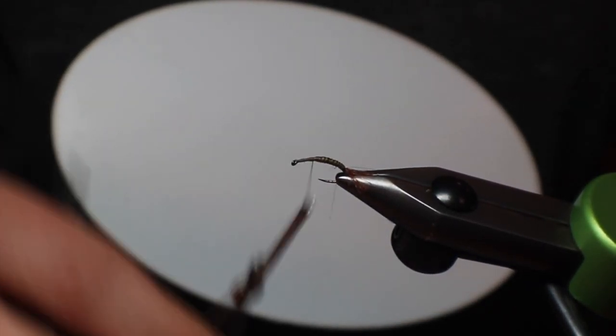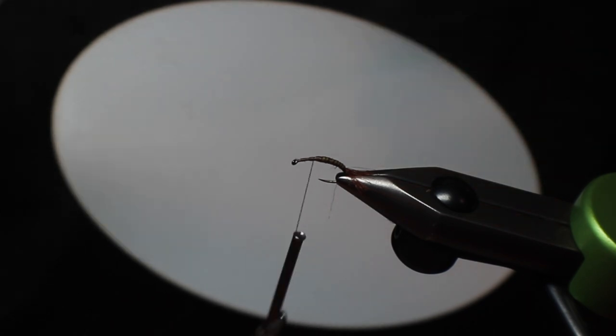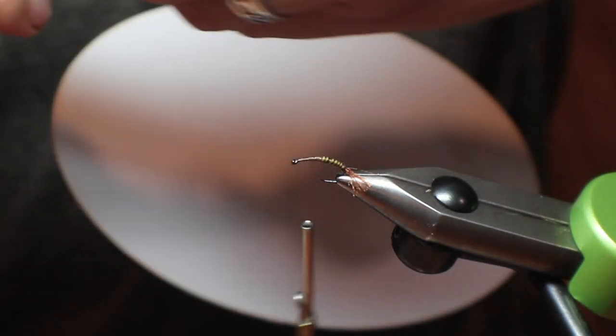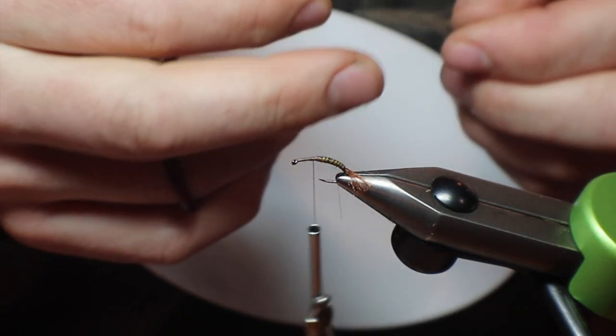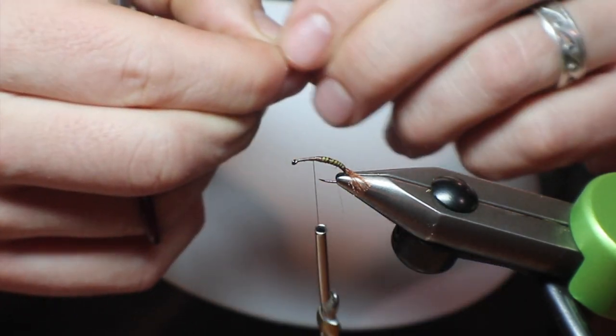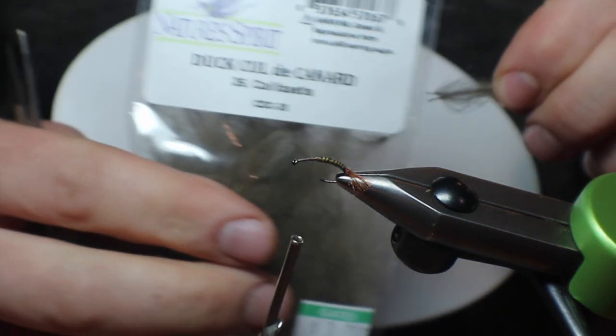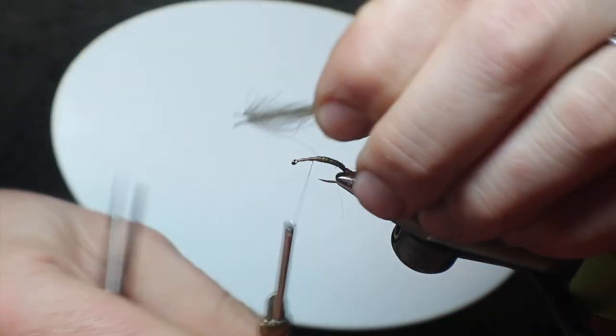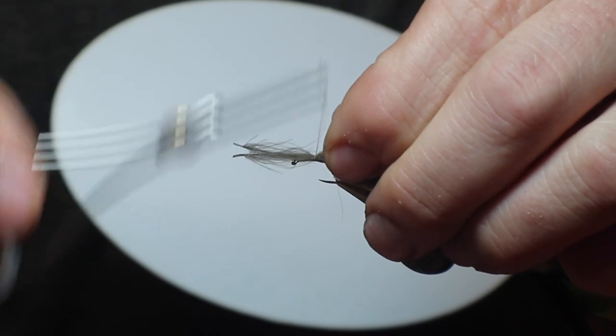All right, so now the cool part of this fly is it's got a CDC hump in the middle of it. I'm going to use two CDC feathers. I think you can use puffs quite well for this. I just haven't... I've always used the full feather. Well, two full feathers. Tie them in facing back like that, and clip.